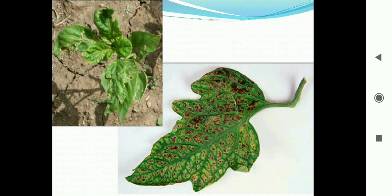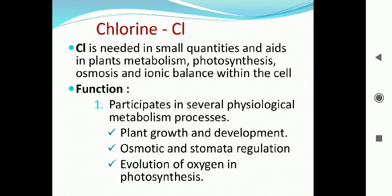Chlorine is needed in small quantities as a micro element and aids in plant metabolism including photosynthesis, osmosis, and ionic balance within the cell. Chlorine is very important for the light reaction of photosynthesis. It is required in very small quantities, but its presence is very important — if chlorine is deficient, photosynthesis and osmosis processes are inhibited.